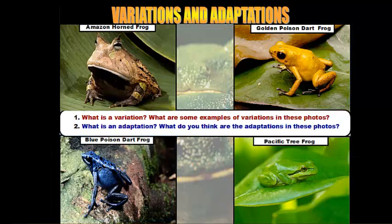A blue frog can survive on land without blending in because these bright colors advertise that it's very poisonous — if something eats it, it will get very sick or might die. The same is true for the golden poison dart frog. So body color is an adaptation for all four frogs, but with different functions: two use it for camouflage, two use it as a warning sign.